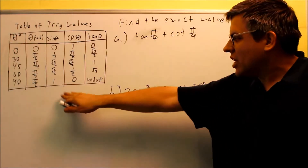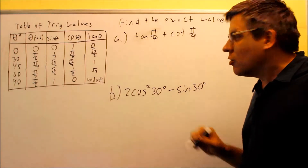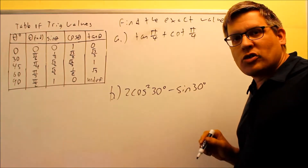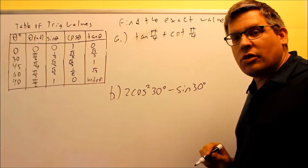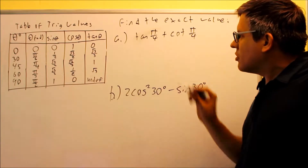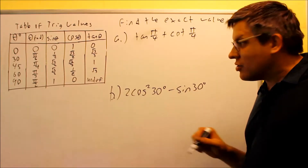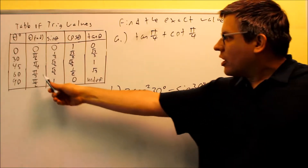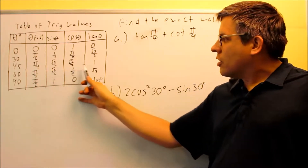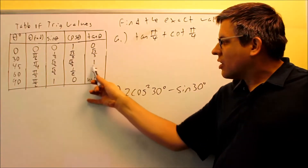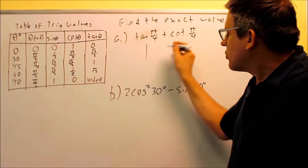Now let's use the same table we just looked at to find exact values. We have two problems that both require values off the table. For tangent of π/4, we can get that off the table directly. Here's π/4 — going over to the tangent column, that tells us we get 1. So tangent of π/4 equals 1.